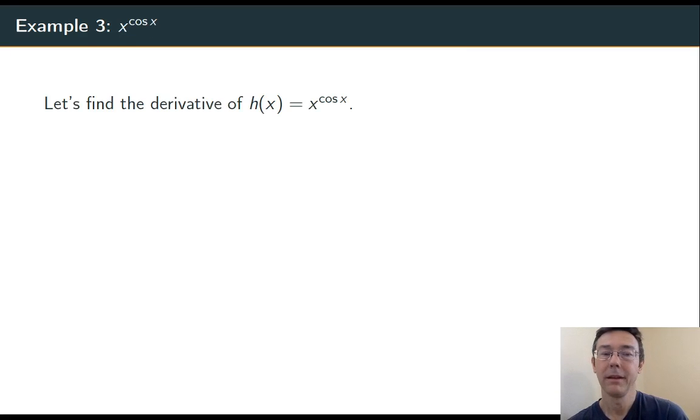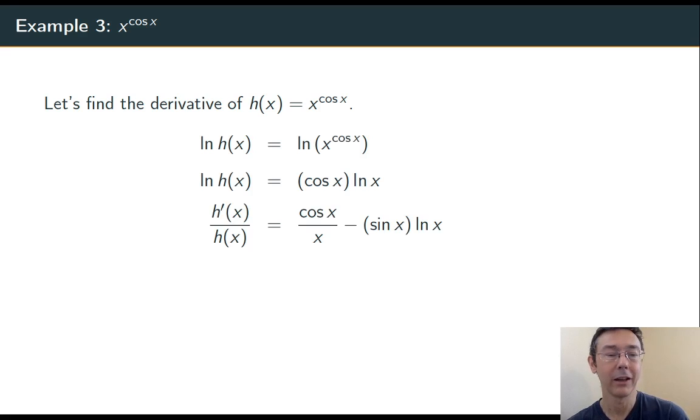Let's do that third problem. h of x equals x to the cosine x. Take logs of both sides, apply the logarithm rule to bring the exponent outside, differentiate both sides,